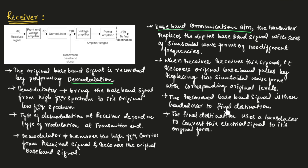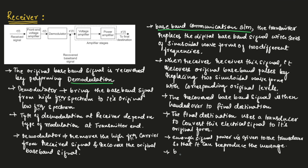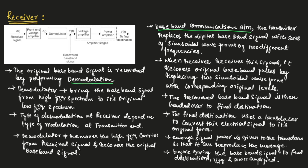The final destination uses an output transducer to convert the electrical signal to its original form. It is essential that enough signal power is given to the transducer so that it can reproduce the original message. Therefore, before giving the baseband signal to the final destination, it is voltage and power amplified by the amplifier stage.